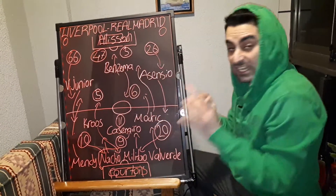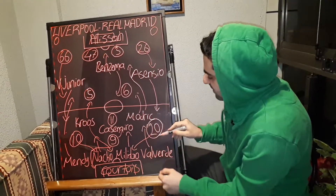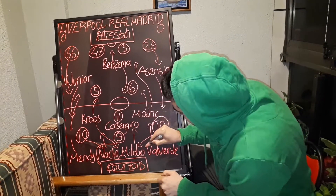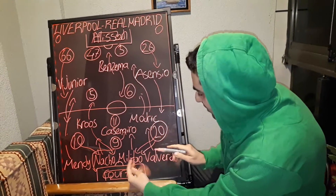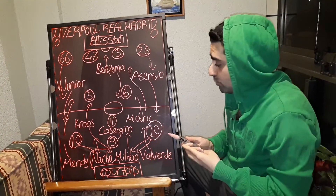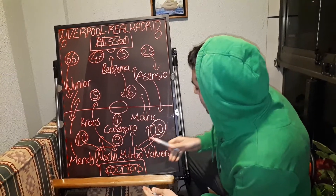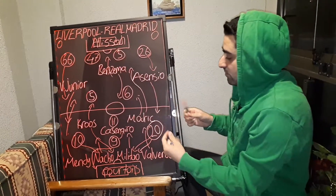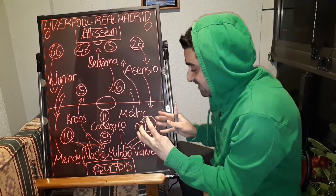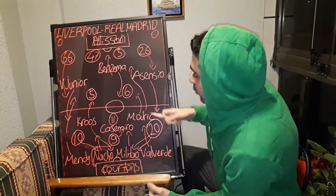After Jota entered the pitch, he put a lot of pressure on Real Madrid's right back. He got into the penalty area searching for goal positions. Mane, Salah, Firmino, and Jota all overloaded into the Real Madrid box in the second half, and all of them searched for goal positions.